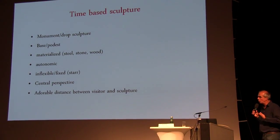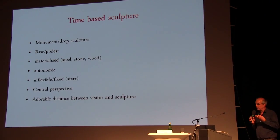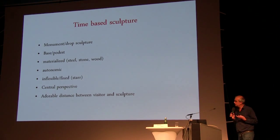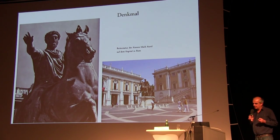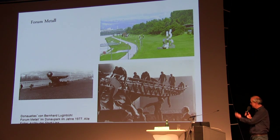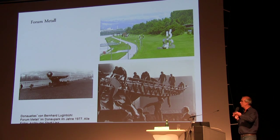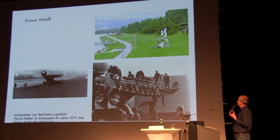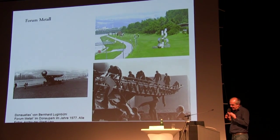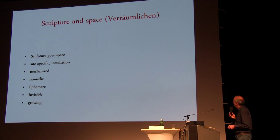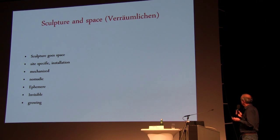Basically when you talk about time-based sculpture, or space and sculpture, and you compare it with the classic idea of sculpture, I think you have six aspects to deal with. In a classical way, if you take a very traditional sculpture or a more contemporary one from the seventies, you always have the idea that it's an object which is autonomous — it's a materialized form, it needs a certain distance for the visitor, and it has a specific relationship with culture.